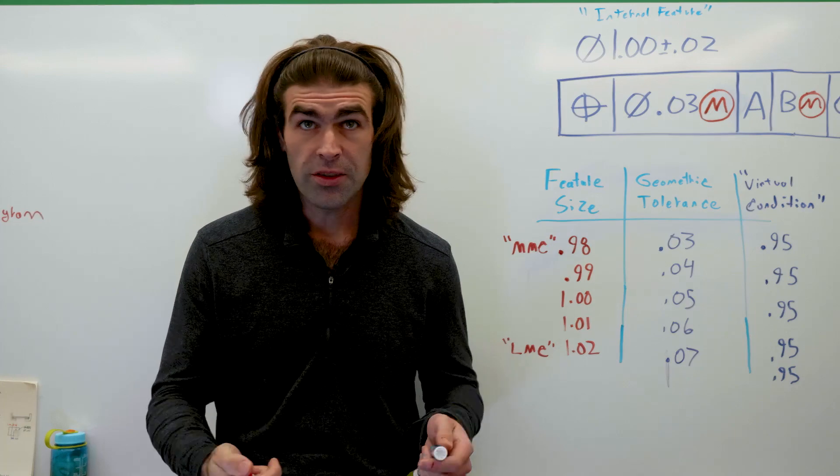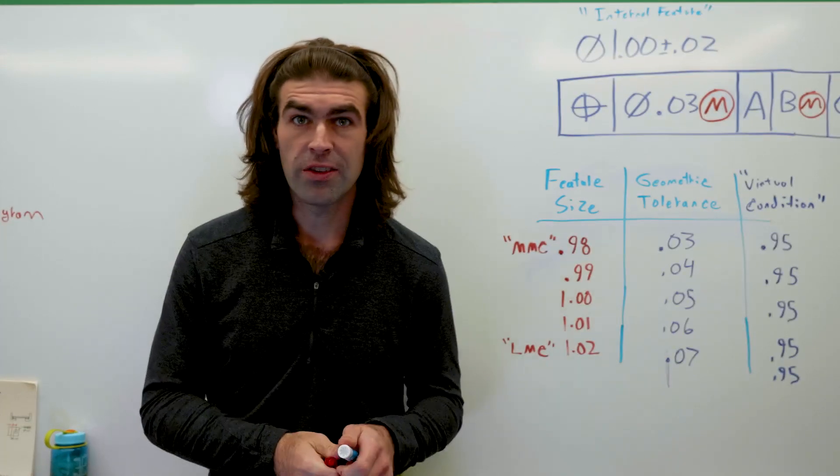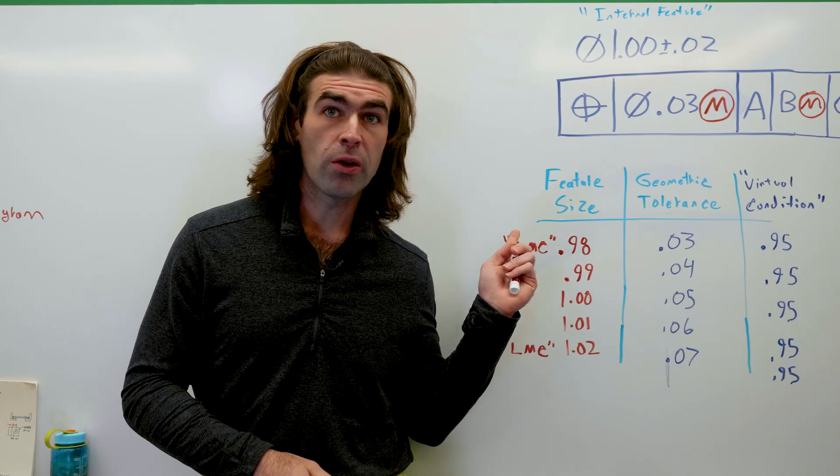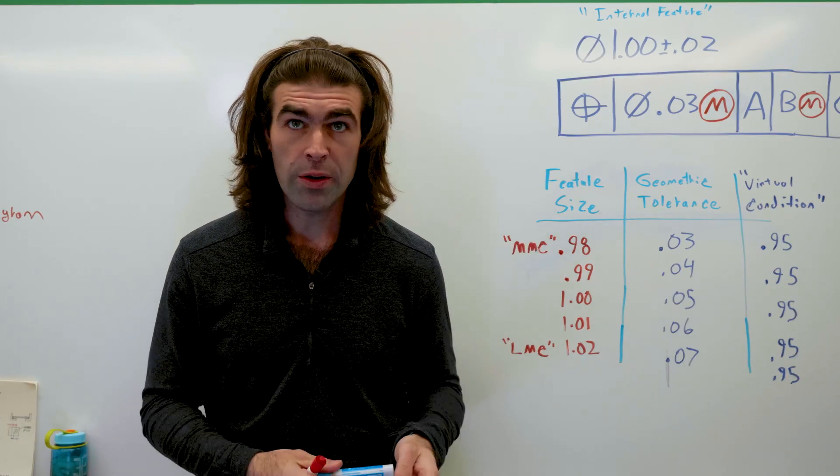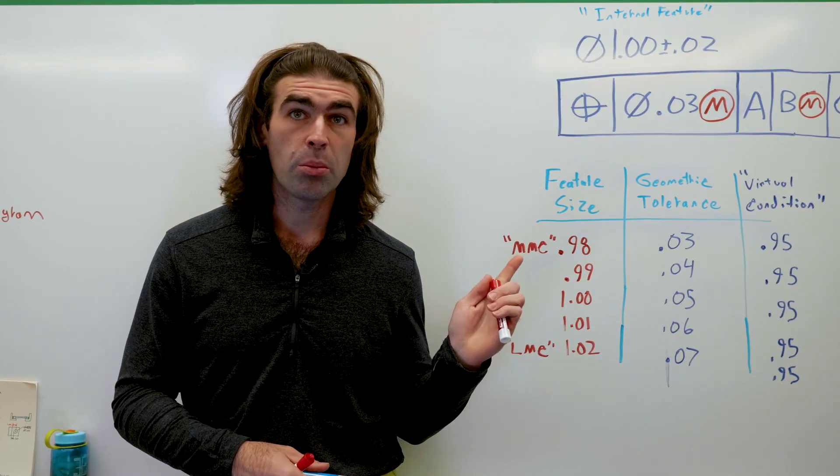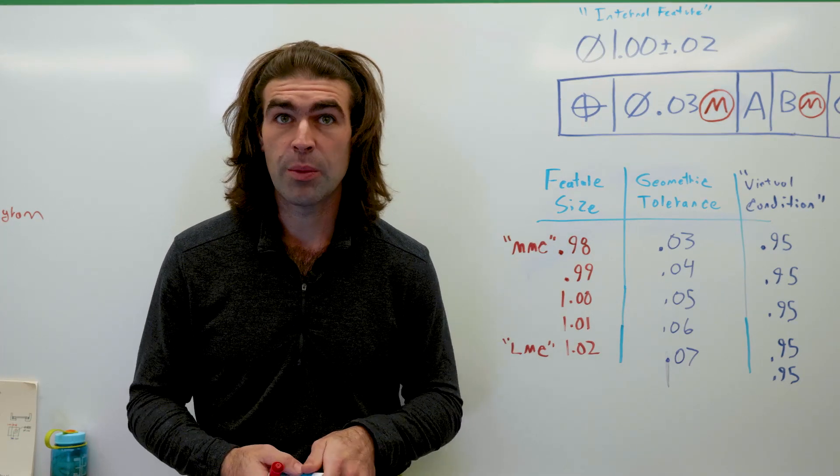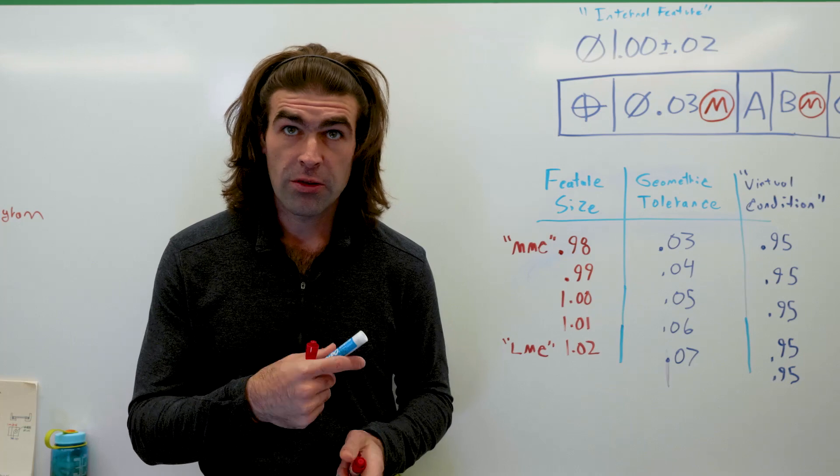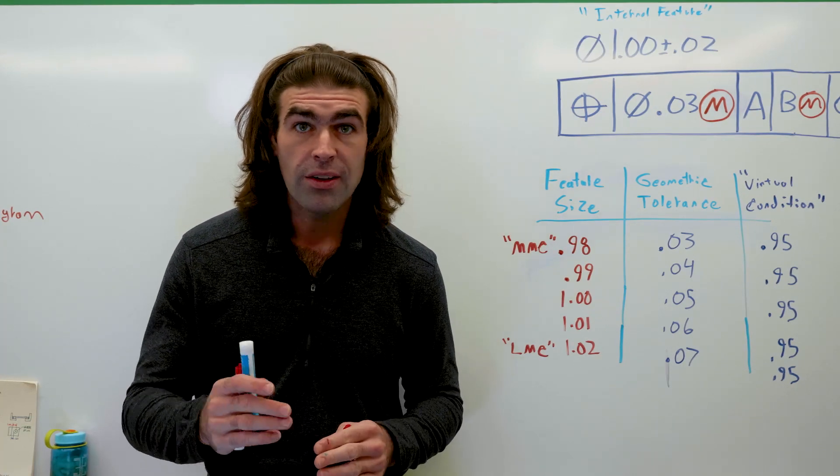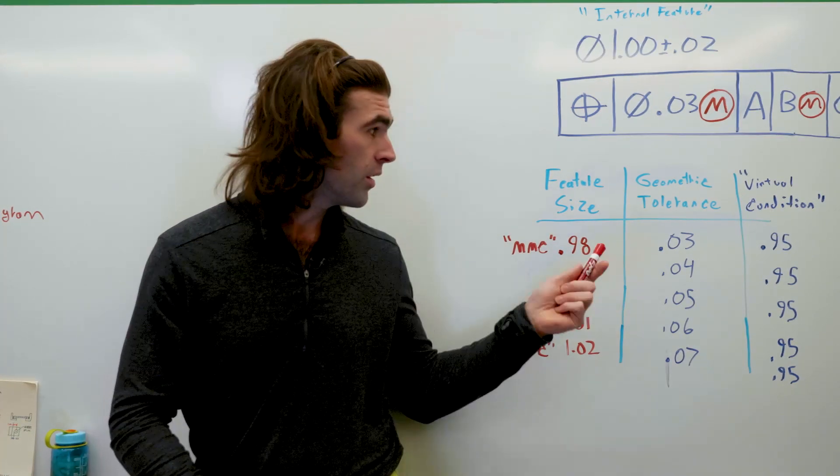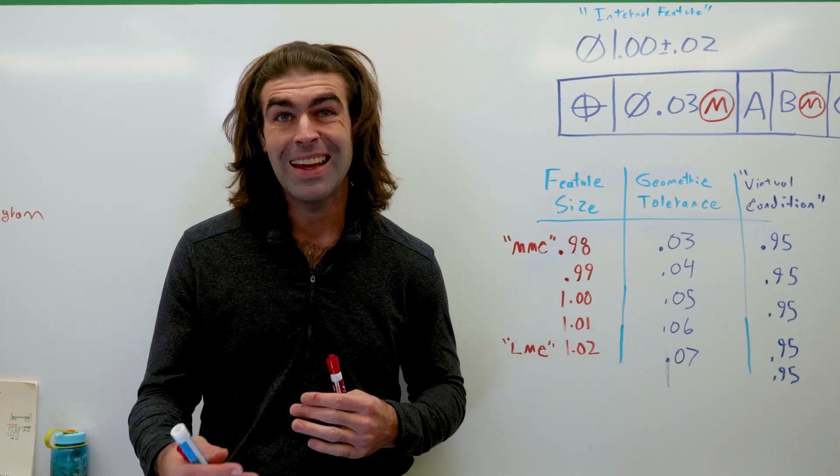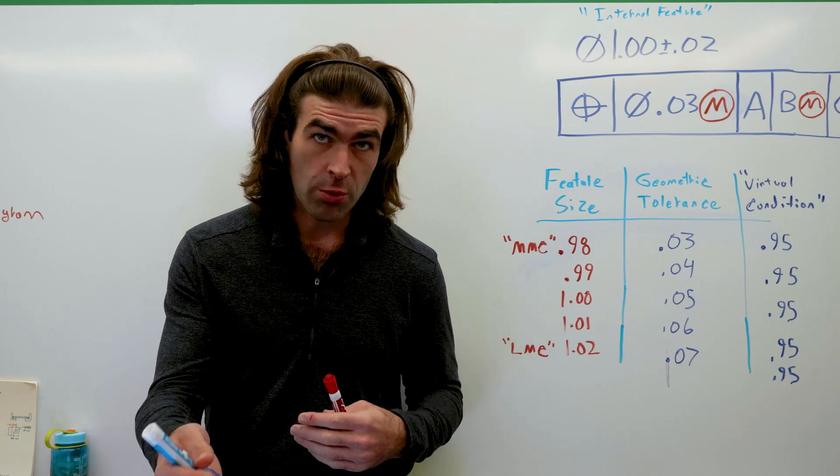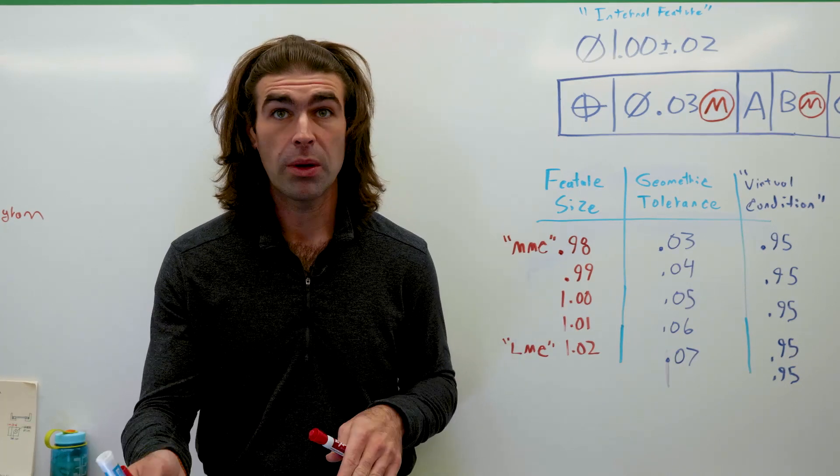So this is the chart I like to make. Of course, it's in tons of textbooks and stuff, but I find it useful. So we're going to compare the feature size for a hole, an internal feature. If it comes in at 0.98, we'll consider that the MMC. Like I mentioned before, the geometric tolerance, in this case position, only applies at MMC. So geometric tolerance, MMC, 0.030. If it comes in at anything other than the MMC, so going toward LMC, aka the hole gets bigger,